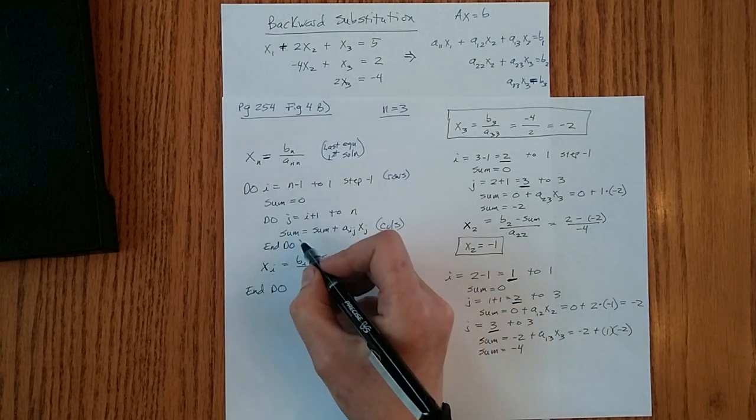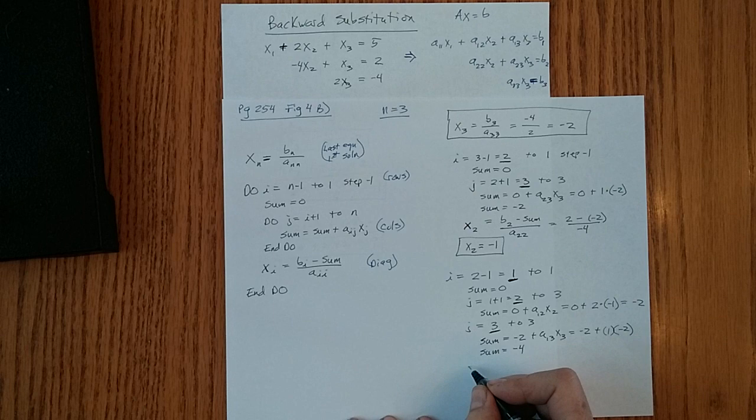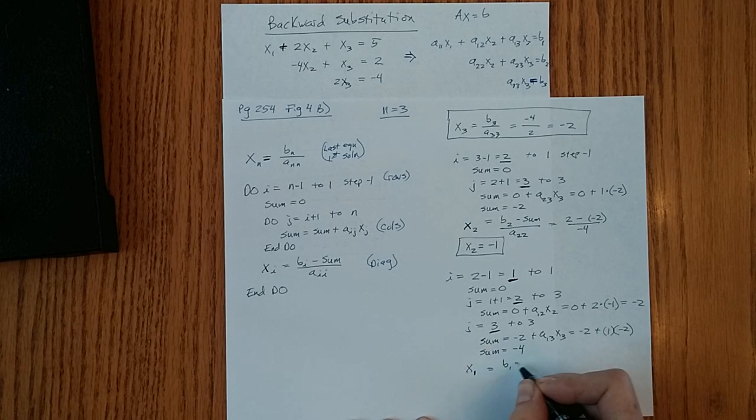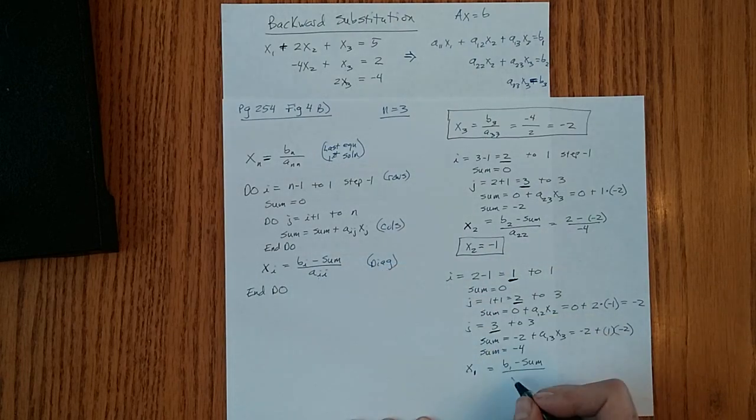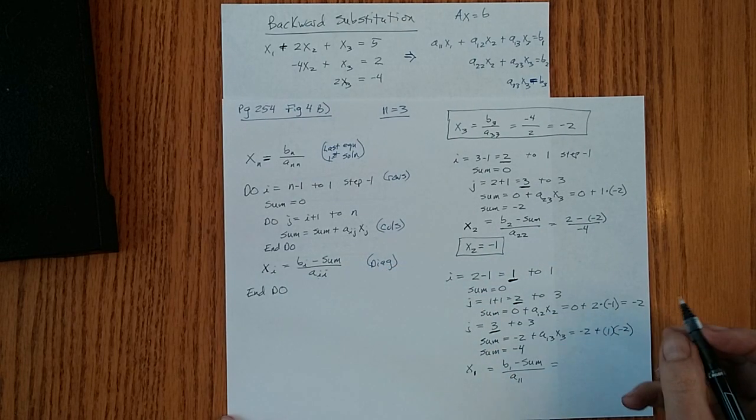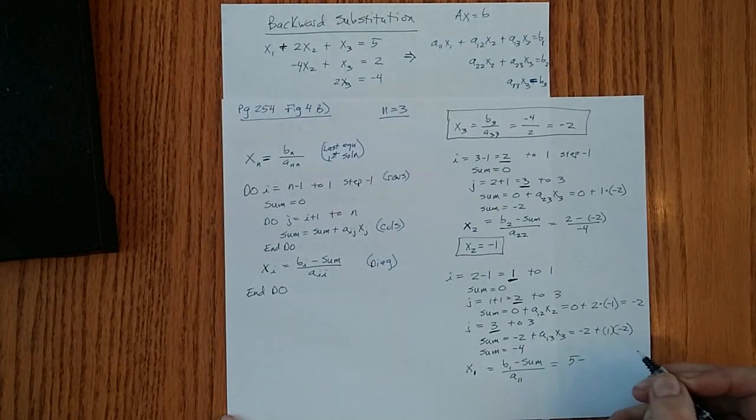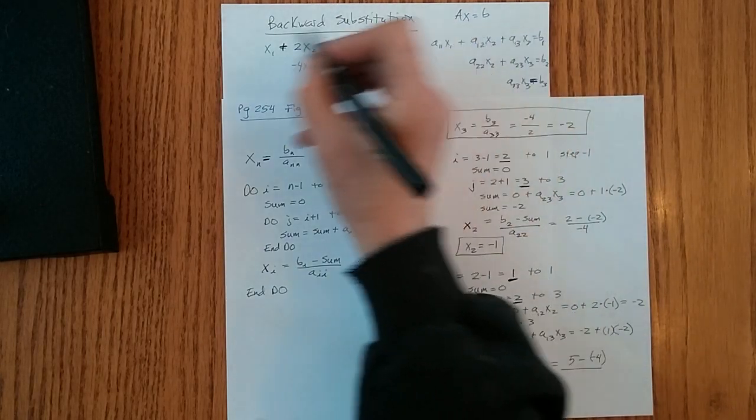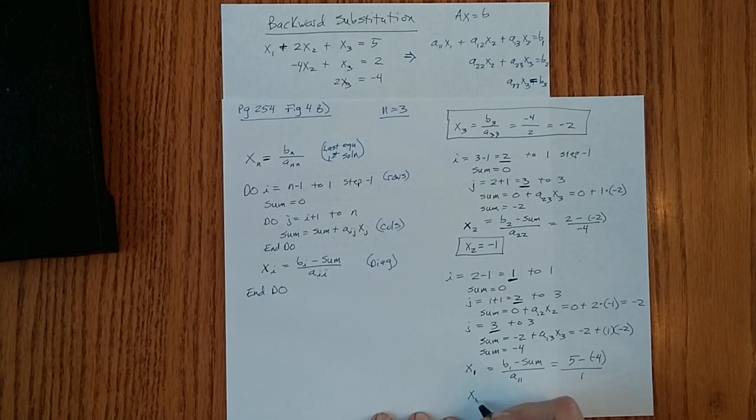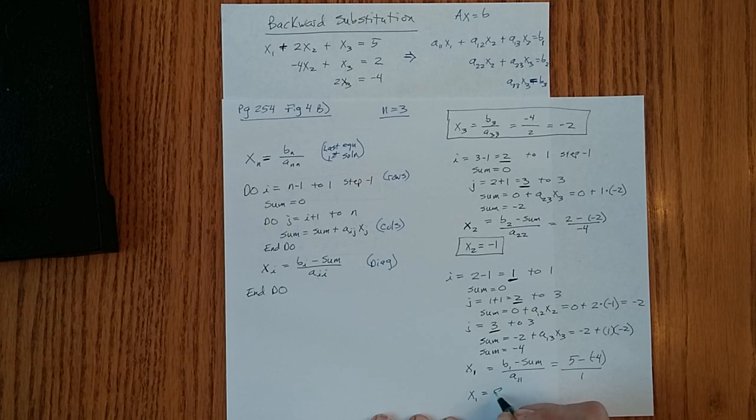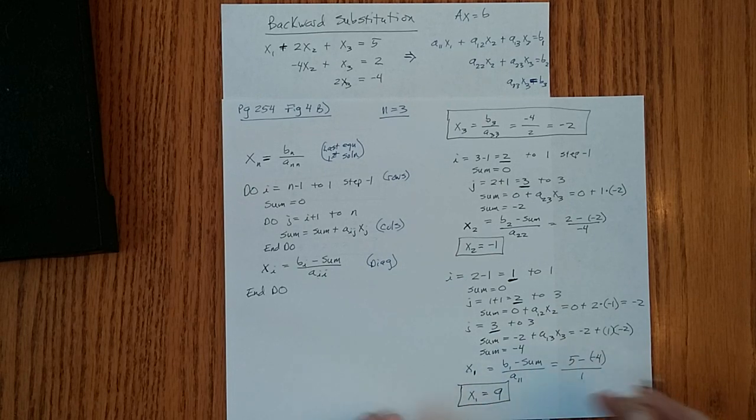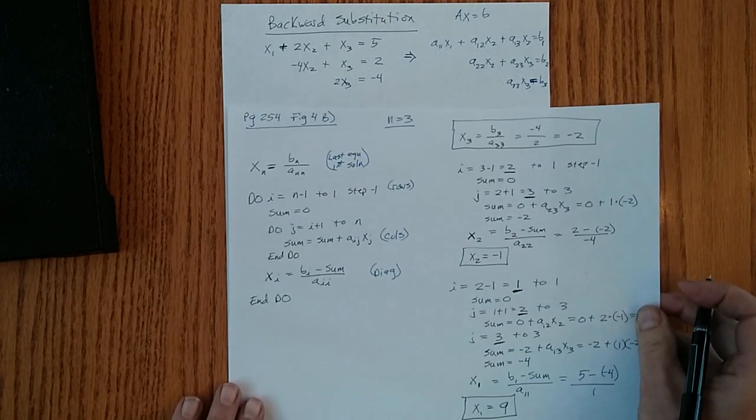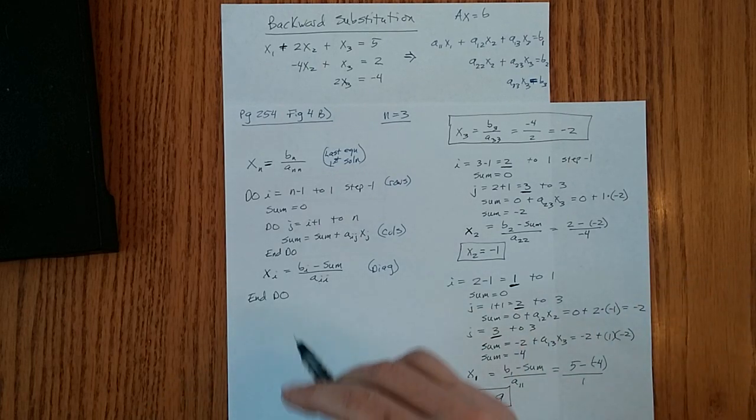Okay, so we're at the end of our j's. We pop out and do our diagonal term. x sub i, i is set to 1, x sub 1 equals b sub 1 minus sum over a sub 1,1 on the diagonal. So b sub 1 is 5 minus sum we calculate as minus 4, and a sub 1,1, this term is 1. So x sub 1 is plus 9. And that's our third solution. And I'll show you, our solution by hand was 9.